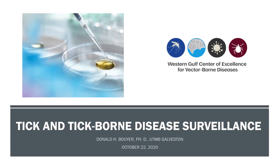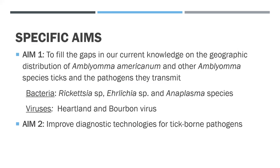Thank everyone for being so patient. Today I'm going to talk about our tick and tick-borne disease surveillance group. When we initiated this, we had two specific aims. Our first specific aim was to fill in the gaps of current knowledge of the geographic distribution of Amblyomma americanum and other Amblyomma species ticks and their pathogens, focusing primarily on three species of bacteria: Rickettsia, Ehrlichia, and Anaplasma species, and the viruses Heartland and Bourbon virus. We also wanted to improve diagnostic technologies for tick-borne pathogens. I want to focus on specific aim one for this presentation.